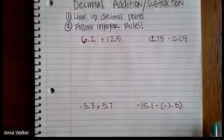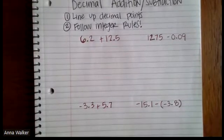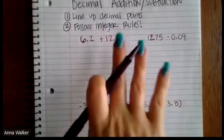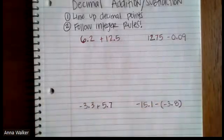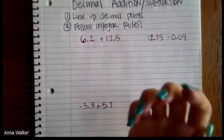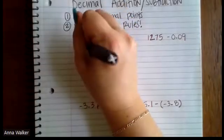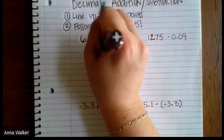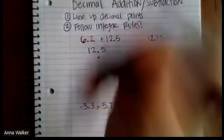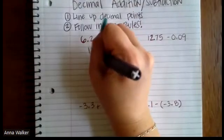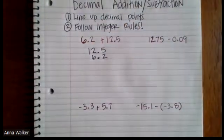The first problem is pretty straightforward: 6.2 plus 12.5. So when I want to line up these decimal points or when I want to add, I typically like to put the biggest number as the top number, but as long as we line up the decimal points, it really doesn't change our answer. So I'm going to do 12.5 and then I'm going to line up 6.2. I'm going to put the decimal point and then I need to put 6 and then .2.